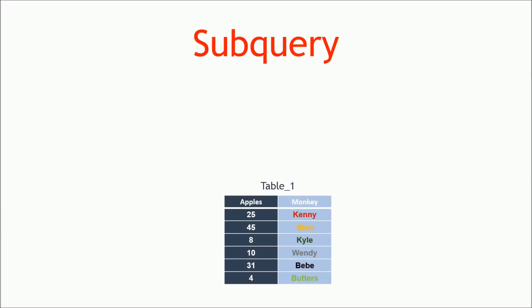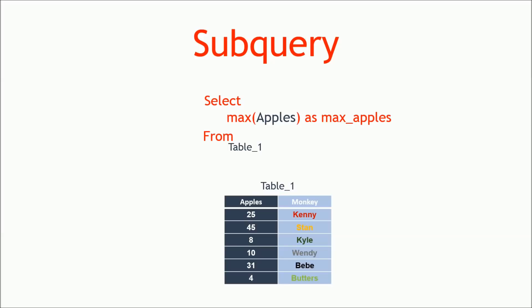This is table 1. We have a bunch of monkeys — we have Kenny, Stan, Kyle, Wendy, Bebe, and Butters — and then we have the amount of apples they eat per week. Let's say I wanted to query: which monkey eats the most apples in a week? I would start off with something like selecting the max of apples as max_apples from table 1. But I can't just select the max because I'm not interested in the amount of apples — I'm interested in the monkey who's eating all those apples. To do that I'm gonna need to keep this result somewhere and use it somewhere else in my query, and that's where the concept of the subquery comes into play.